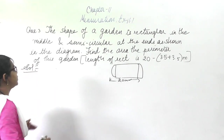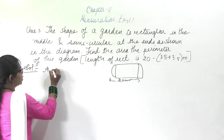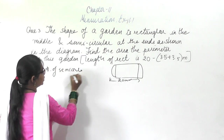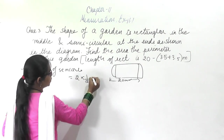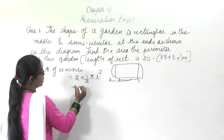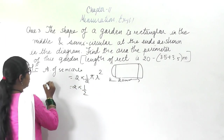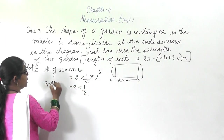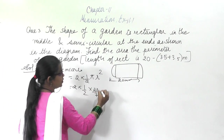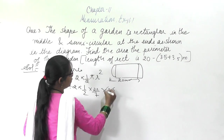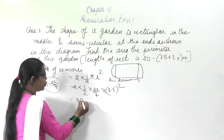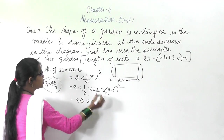After finding the area of the rectangle, we will find the area of the two semicircles. Area of 2 semicircles equals 2 into (1/2) pi r squared, that is pi r squared. Substituting pi as 22/7 and r as 3.5, that is 22/7 into 3.5 squared. On solving this you will get 38.5 meter square.